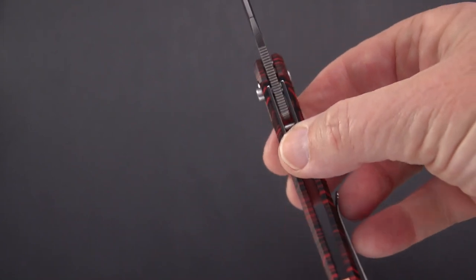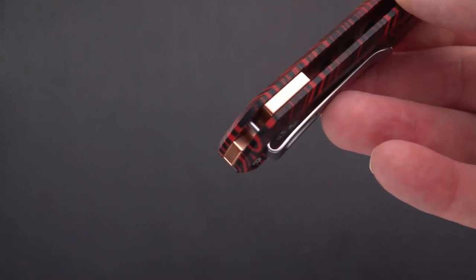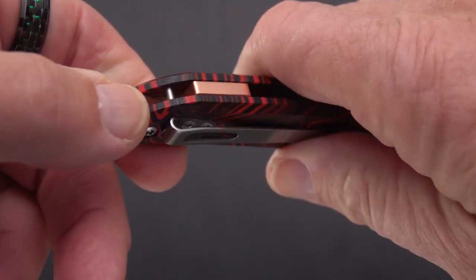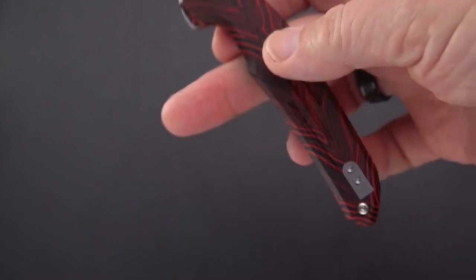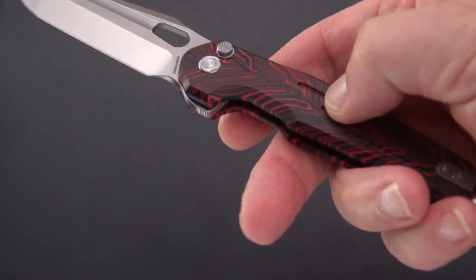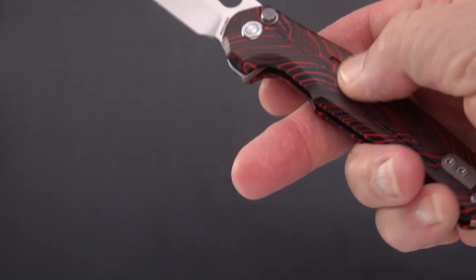Got pretty much wide open construction except for that short backspacer. We've got a nicely provisioned lanyard pin that's hidden so you don't have any interruption, any holes in the handle. We've got grooves or fullers down the handle here.